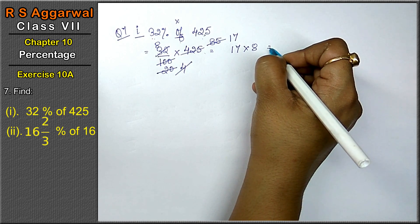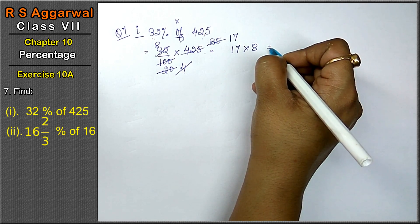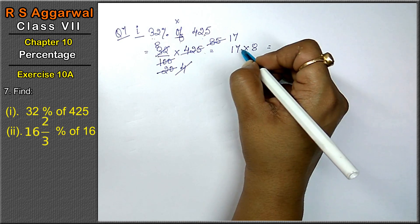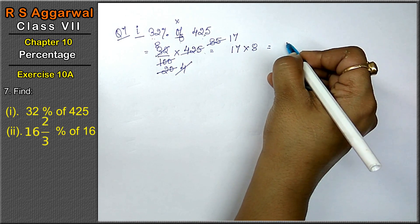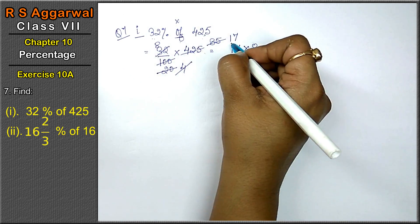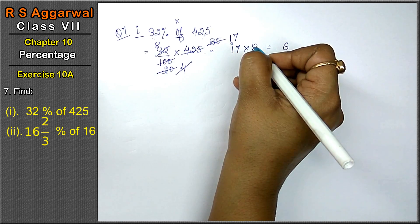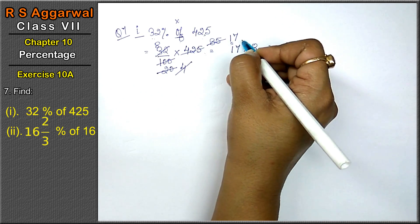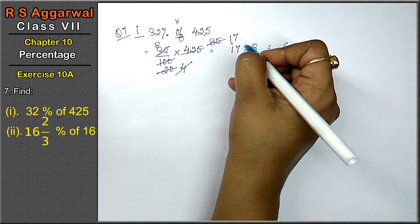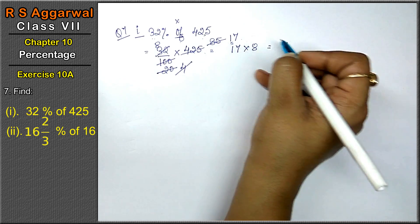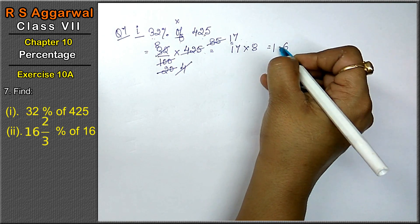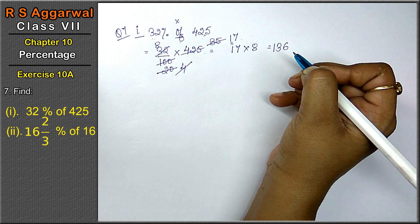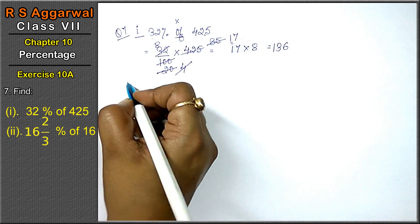Now, 17 into 8 will be: 8×1 is 8, 7×8 is 56, carry gives 8, 9, 10, 11, 12, 13. 136 is the answer.